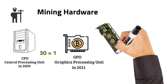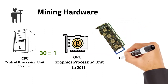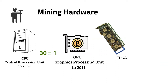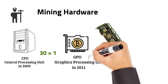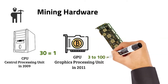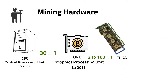Another evolution came later with FPGA mining. An FPGA is a piece of hardware that can be connected to a computer in order to run a set of calculations. They are just like GPUs but 3 to 100 times faster. The downside is that they are harder to configure, which is why they weren't as commonly used in mining as GPUs.